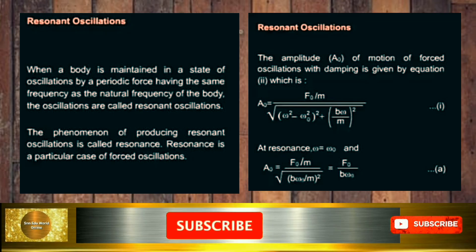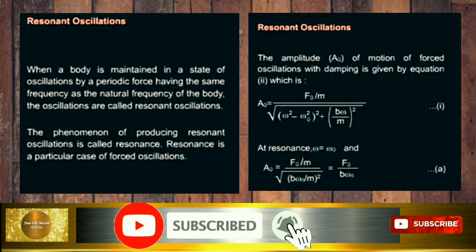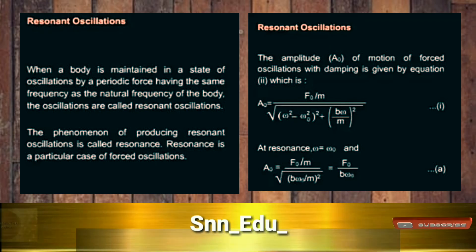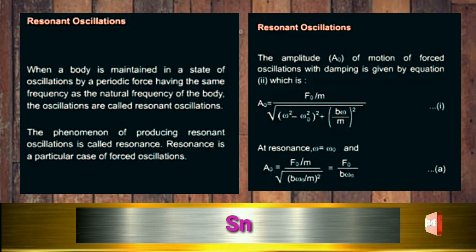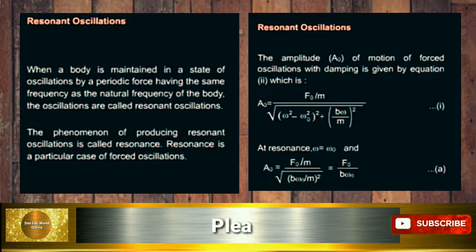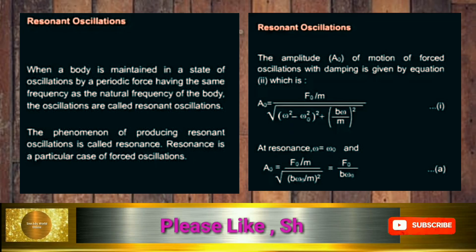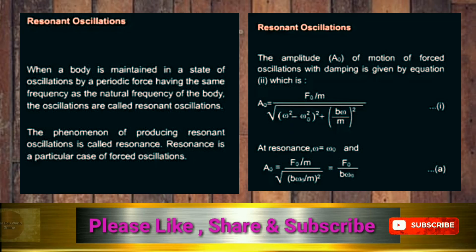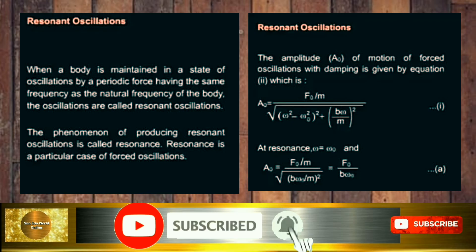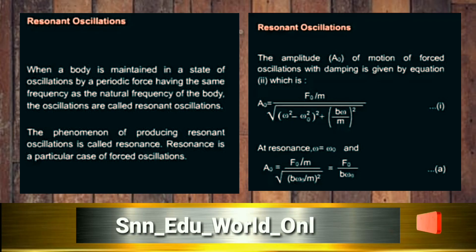How we can find the amplitude? The amplitude A₀ of motion of forced oscillations with damping is given by equation 2: A₀ = (F₀/m) / √[(ω² - ω₀²)² + (bω/m)²].